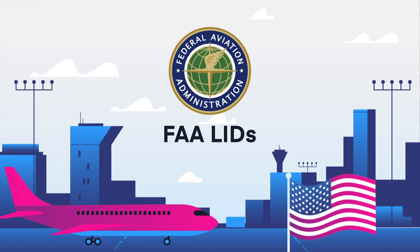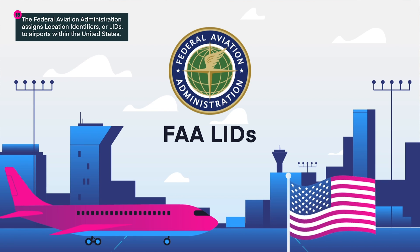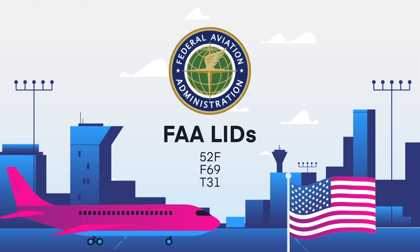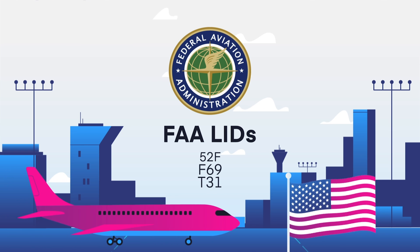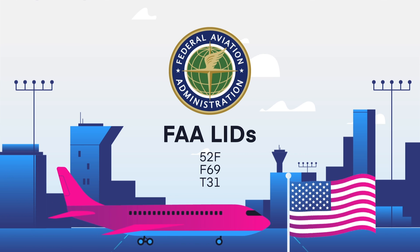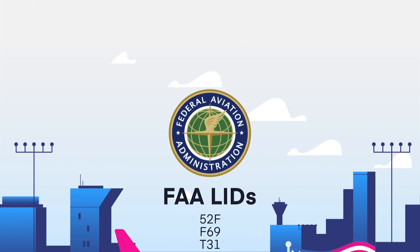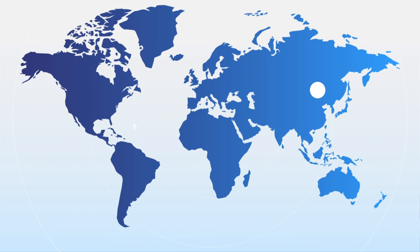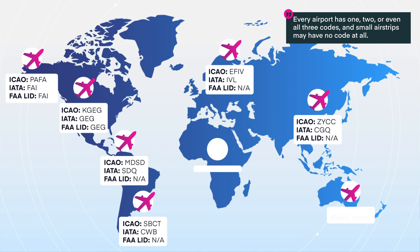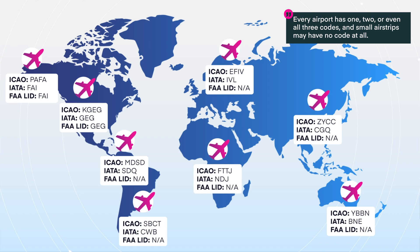The Federal Aviation Administration assigns Location Identifiers, or LIDs, to airports within the United States. LIDs are only used in the United States and use a combination of three or four characters, including letters and numbers. Every airport has one, two, or even all three of these codes, and small airstrips may have no codes at all.